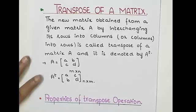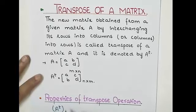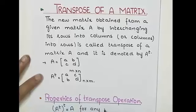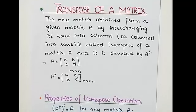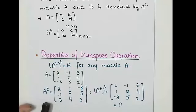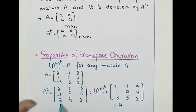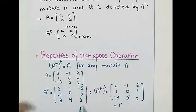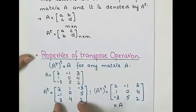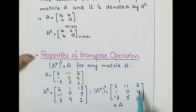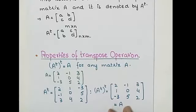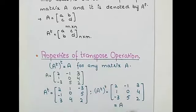Property 1: (A^T)^T = A, for any matrix A. Let's check it by example. First we take the transpose of A — changing the rows into columns: row 1, 0, 4 written as a column, and 3, 5, 2 written as a column. Then taking the transpose of that result again — writing each row into a column — the matrix obtained is equal to A. So (A^T)^T = A.